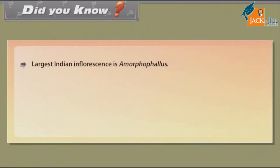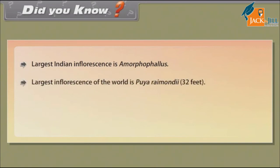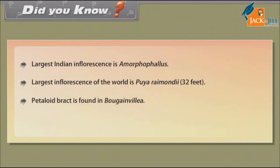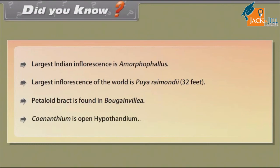Did you know: the largest Indian inflorescence is Amorphophallus? The largest inflorescence of the world is Puya raimondii at 32 feet. Petaloid bracts are found in Bougainvillea. Synanthium is an open hypanthodium.